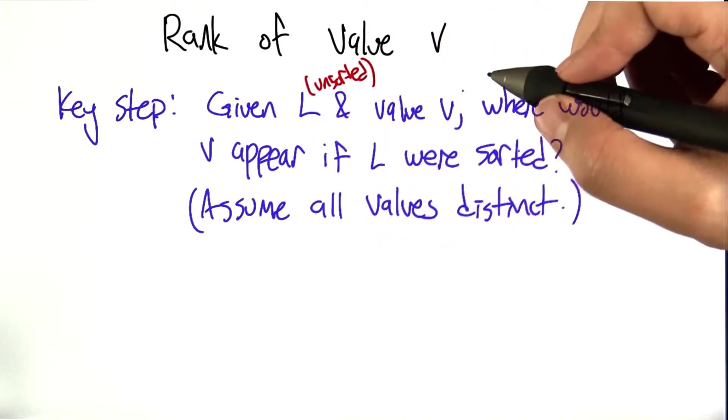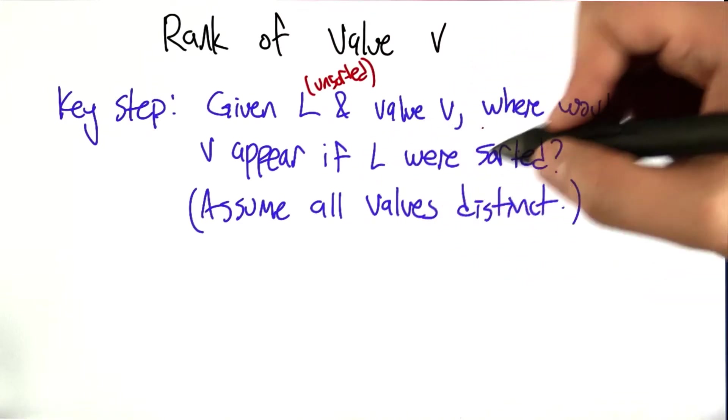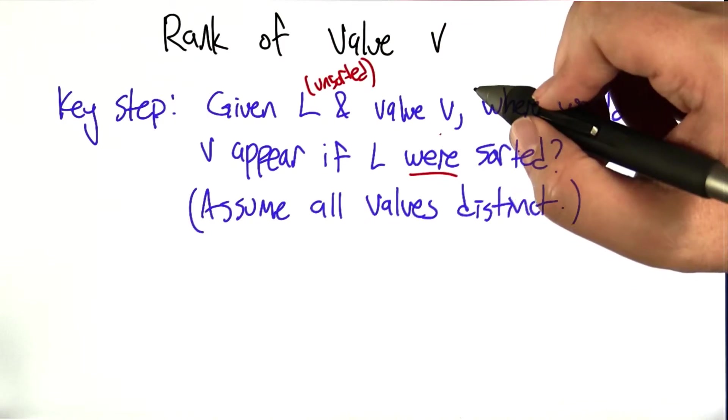and we're given a value V, and we'd like to find out where V would appear if L were sorted. It's not sorted, but if it were sorted, where would this value V appear in the list?